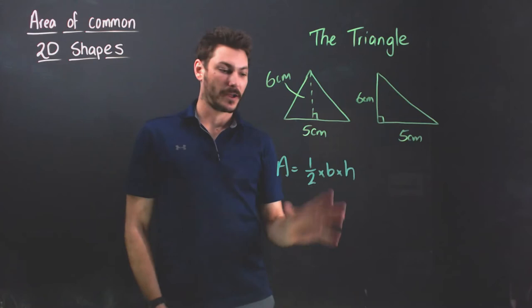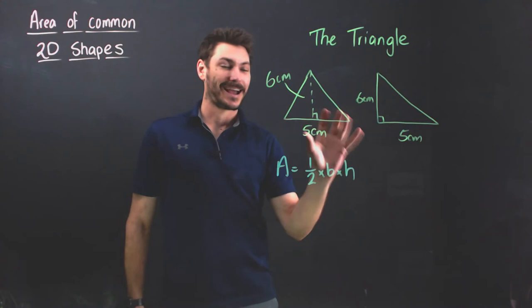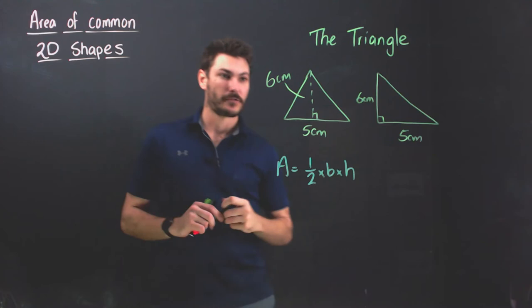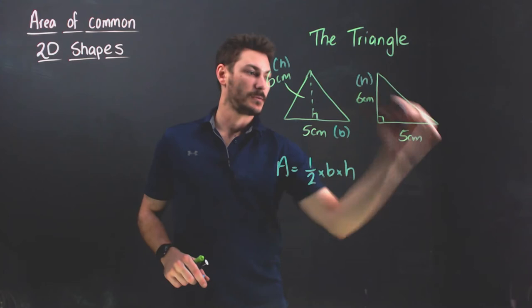Never in our area calculations are we going to be using a slant height. In our area calculations for a triangle it's always the height from the base to the point. Without further ado I'm going to call this B, I'm going to call this H for height, and it's the same in both triangles. I sub them into my formula.